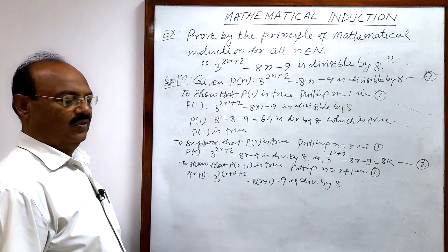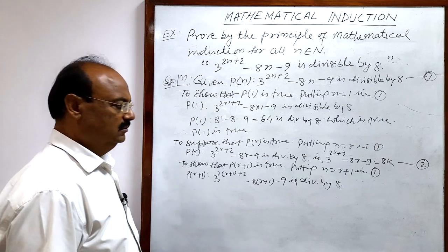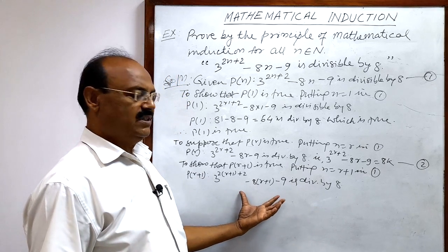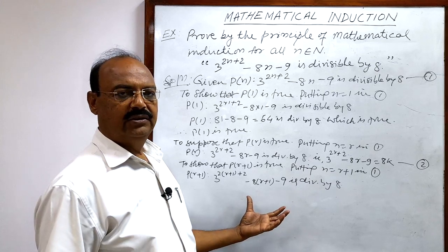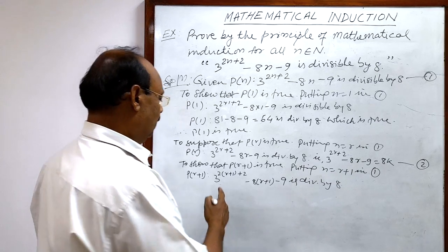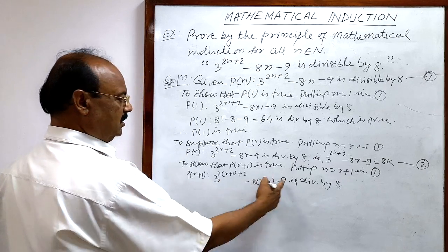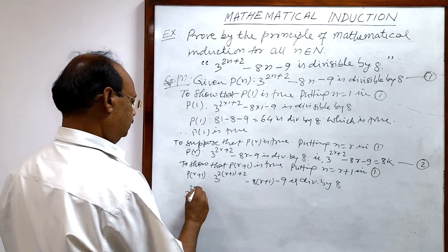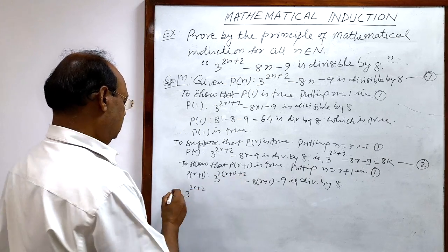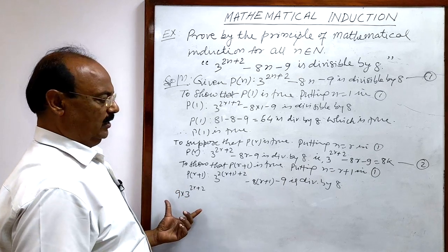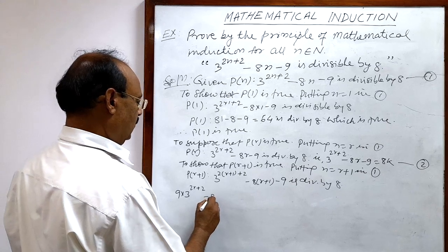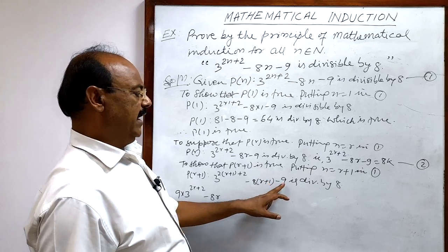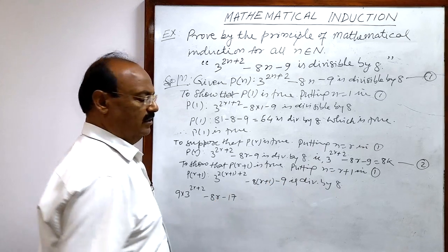To show this expression is divisible by 8, we need to show that 8 is a factor. We can write this as 9 times 3 to the power 2R+2, since 2(R+1)+2 equals 2R+4, so 3 to the power 2R+4 is 9 times 3 to the power 2R+2. Then we have minus 8R minus 8 minus 9, giving minus 8R minus 17.